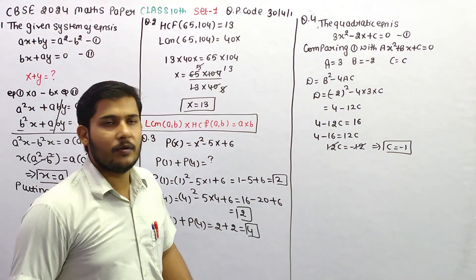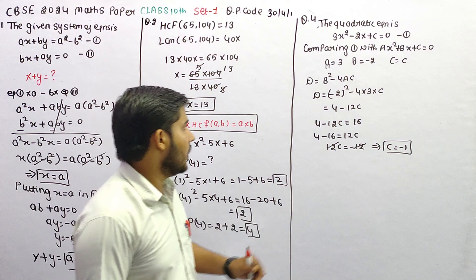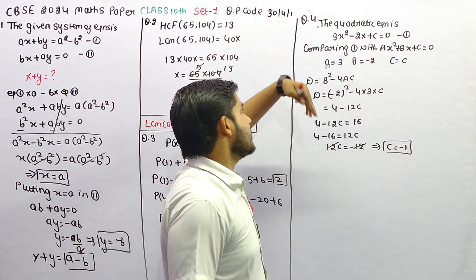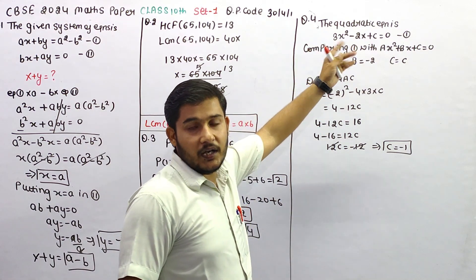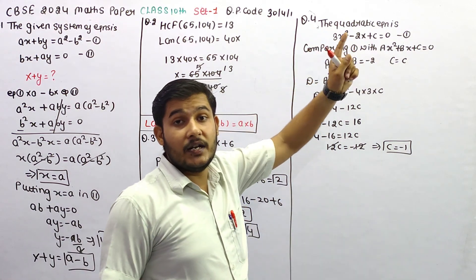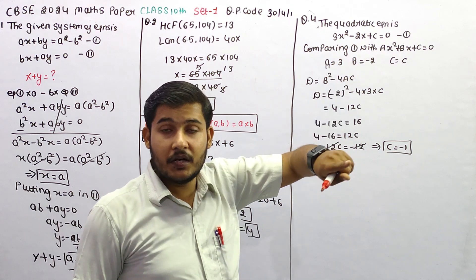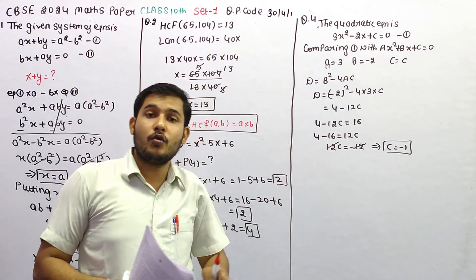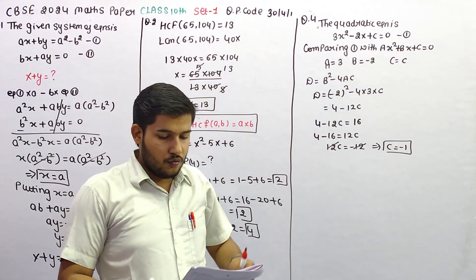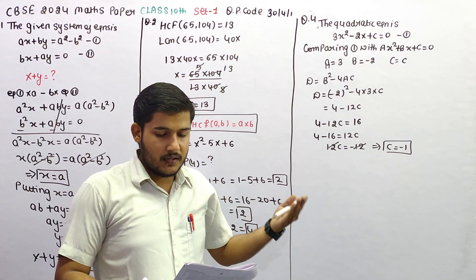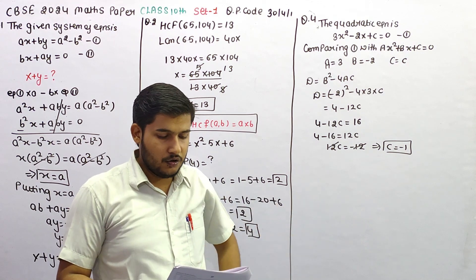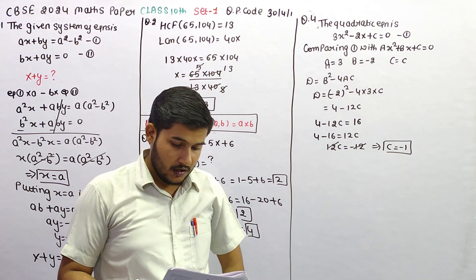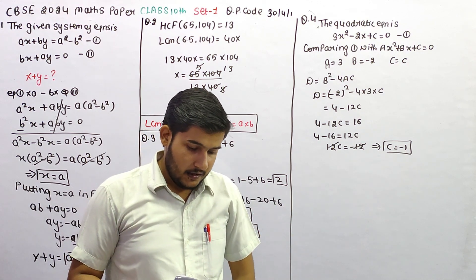Quite simple approach हमने follow की है। यहाँ पे discriminant हमने निकाल लिया, एक discriminant question में दे रखा था, दोनों की value को compare किया, और जो equation में c की value थी वो हमें minus 1 मिल गई।